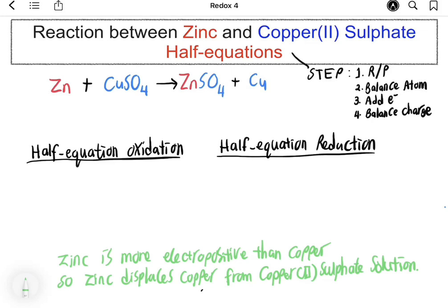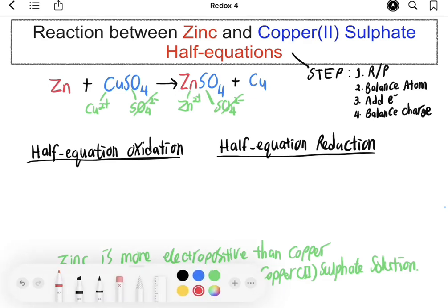Moving on to writing the half equations of oxidation and reduction for the reaction between zinc and copper sulfate solution. First, we will convert the chemical equation into an ionic equation, where all aqueous solutions are converted into their respective ions. Metals like zinc and copper remain unchanged. Next, ions that exist on both the reactant and product sides can be cancelled out — in this case, the sulfate ion. We then write down whatever is left in the equation.